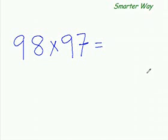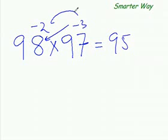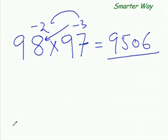The smarter way of multiplying 98 times 97 would be - watch me. That's your answer. So, was it too fast for you to follow? So, let me give you a very slow motion action replay of what I have just done.